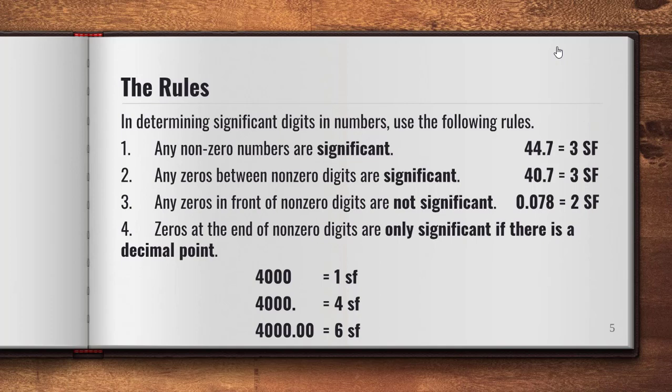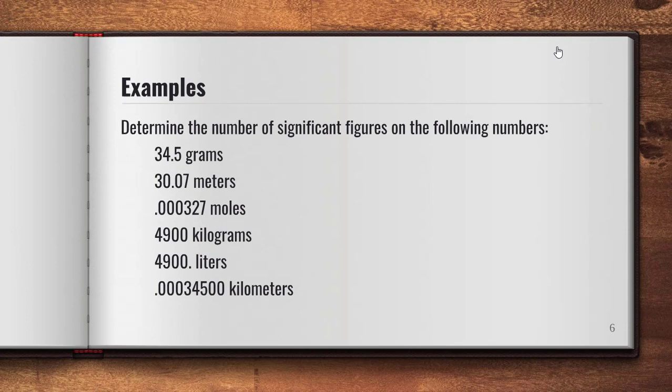Those are the four rules for figuring out significant figures. Let's determine the number of significant figures in some examples. 34.5 grams — all digits are non-zero, so that's three significant figures. 30.07 meters — two zeros are between two non-zero digits, so that's four significant figures. 0.000327 moles — zeros preceding non-zero digits are not significant, so that's three significant figures. 4900 kilograms with no decimal point — trailing zeros are not significant, so that's two significant figures.